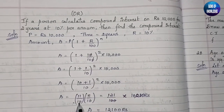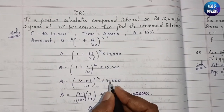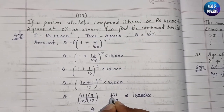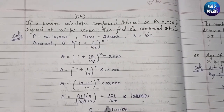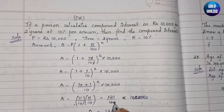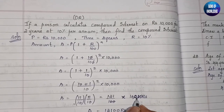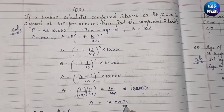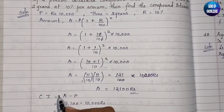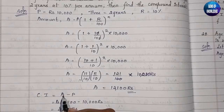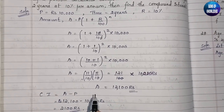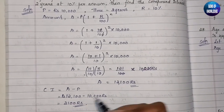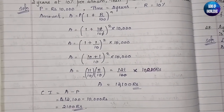So A = (11 × 11) / (10 × 10) × 10,000 = 121/100 × 10,000. The two zeros in 100 cancel with two zeros in 10,000, giving 121 × 100 = ₹12,100. Then CI = A − P = 12,100 − 10,000 = ₹2,100. That's the solution for question 26.